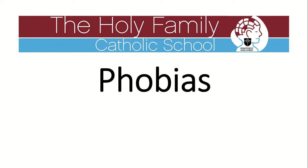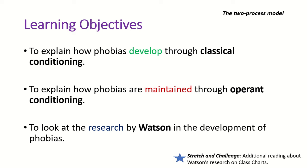For phobias, we've got to explain it from a behavioural point of view. We've got to look at the treatment as well. So these lessons will only focus on phobias and that will last us the entirety of this week. Our objectives are explaining the two process model: how phobias develop through classical conditioning, and how phobias are maintained through operant conditioning. We only need to know one piece of actual research — by a man called Watson, who used Pavlov's theory of classical conditioning to demonstrate how a young child can develop a phobia through association.